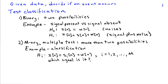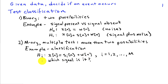A binary test has two possibilities. An M-ary, or multiple hypothesis test, has more than two possibilities. So we might have a classification problem where we observe data and there are M possibilities — M different signals plus noise — and we want to decide which of those M signals is in that particular data observation. This comes up, for example, in wireless communications, where we might send different waveforms to represent different constellations or patterns of bits.